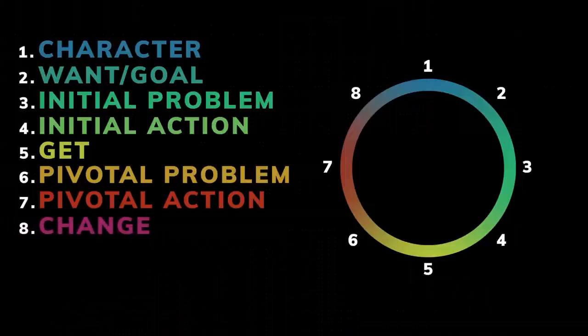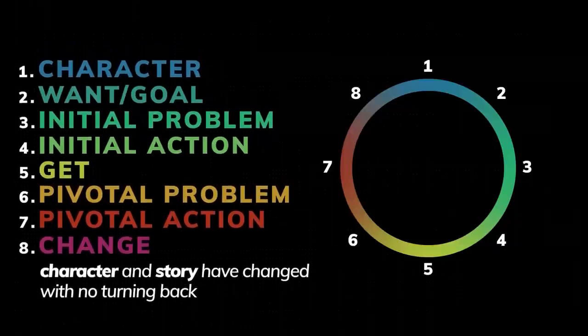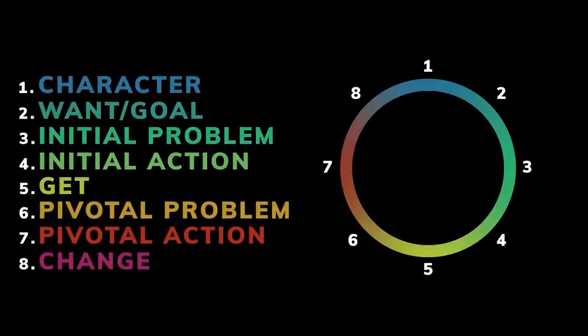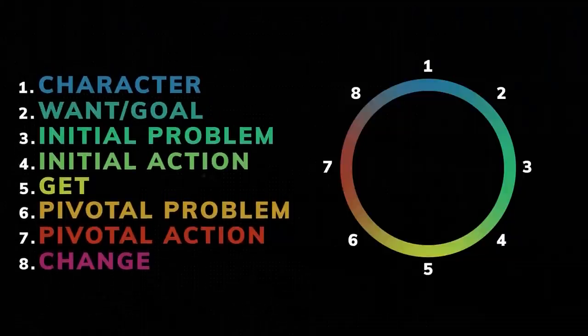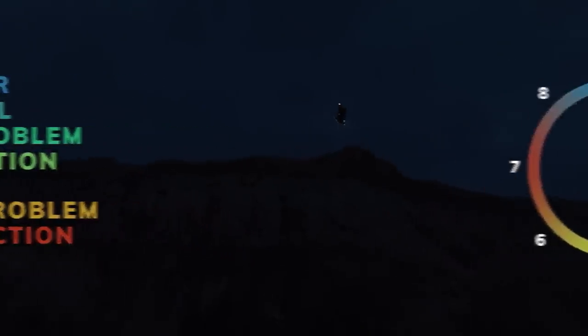Eight: change. Through the events of one through seven, your character and story world should be changed in some way. How has it changed? You need to make it clear to the audience that there is no turning back, and your character has radically changed themselves and their situation. Now let's take this view of the story circle and apply it to a story with a very strong external plot.